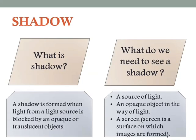Let's understand what a shadow is. A shadow is formed when light from a light source is blocked by an opaque or translucent object. What do we need to see a shadow? A source of light, an opaque object in the way of light, and a screen. A screen is nothing but a surface on which images are formed.